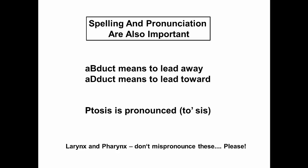Spelling and pronunciation are also quite important. There are regional and global differences in pronunciation, but there are general rules. For instance, 'abduct' means to lead away and 'adduct' means to lead toward — anatomists often emphasize the distinction between these. The word 'ptosis' is pronounced 'ptosis,' not 'p-tosis.' And a personal pet peeve: 'larynx' and 'pharynx' — please do not mispronounce these as 'lar-nix' or 'far-nix.' There is no reason they should be pronounced that way.